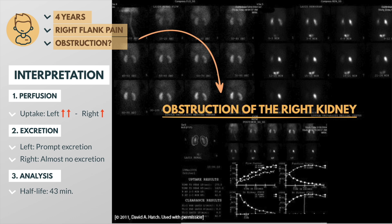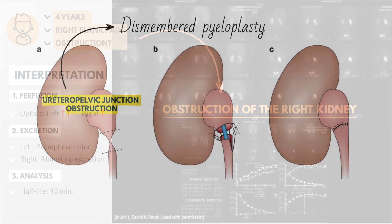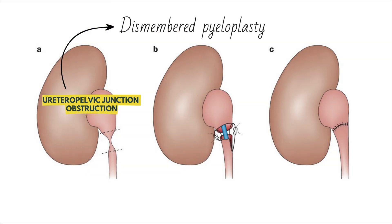The most common cause of hydronephrosis in a child is a ureteropelvic junction obstruction. If this turns out to be the case, a dismembered pyeloplasty should be performed to relieve the obstruction.